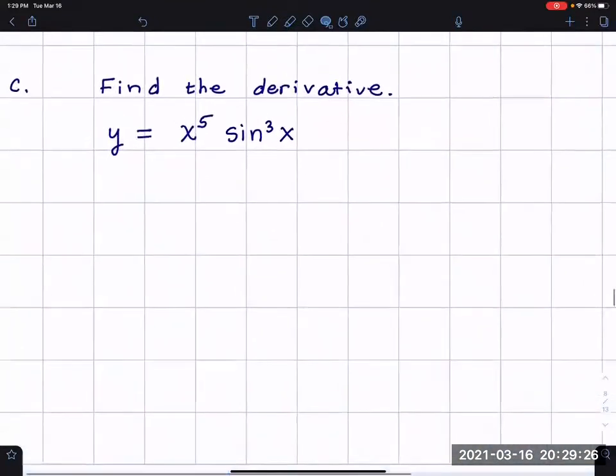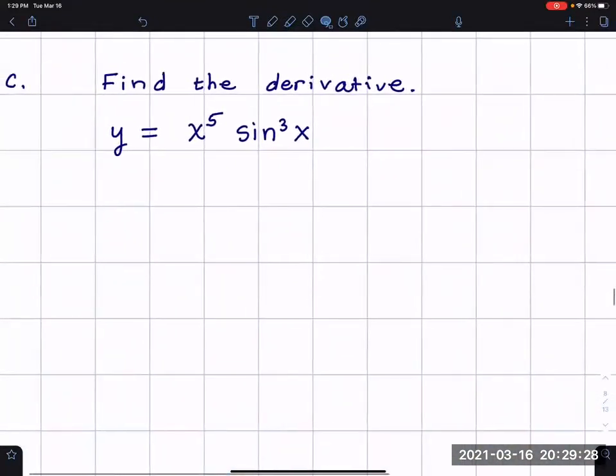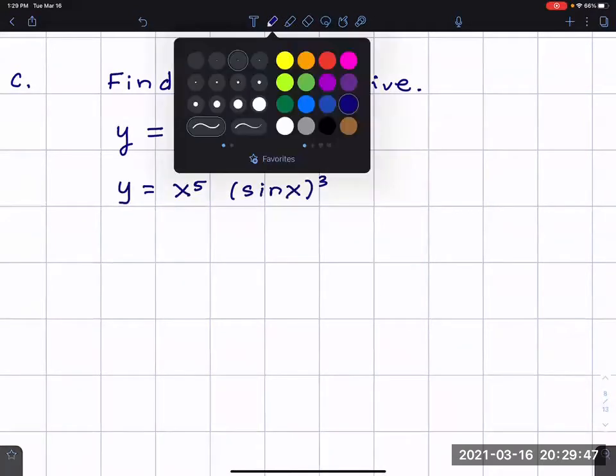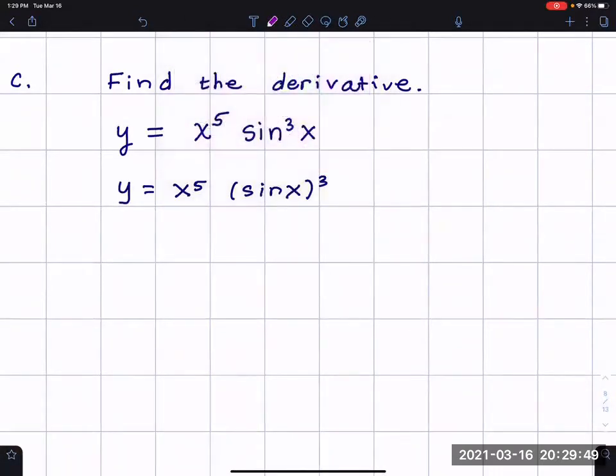Okay, we're going to find the derivative of this function and there's a lot going on here. Sometimes it helps for me to write sine to the third power x as sine x raised to the third power. Another thing is to convince myself that this is actually a product, and I put a dot there. It's actually a product of two functions.